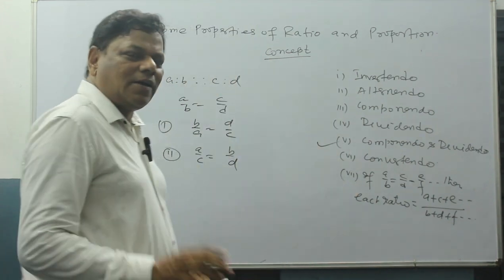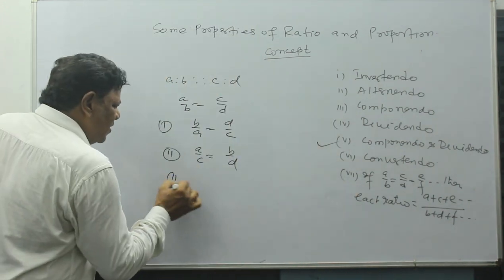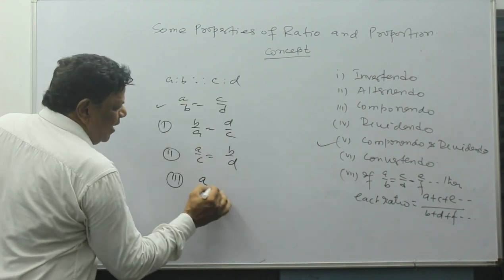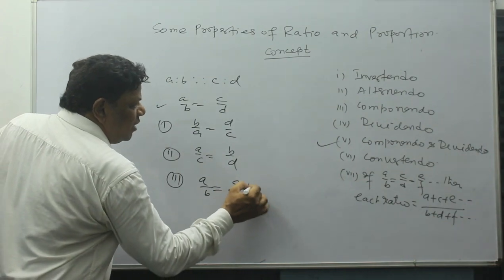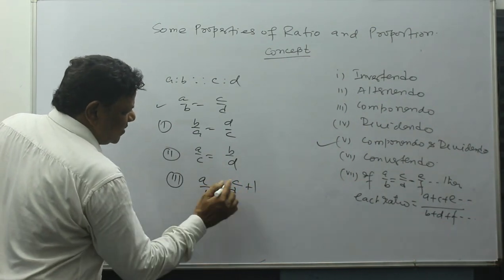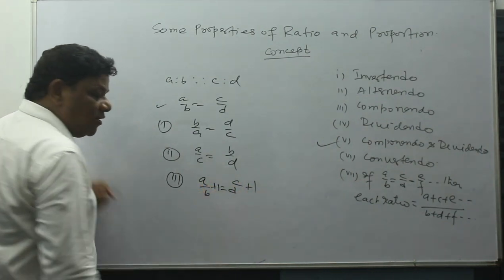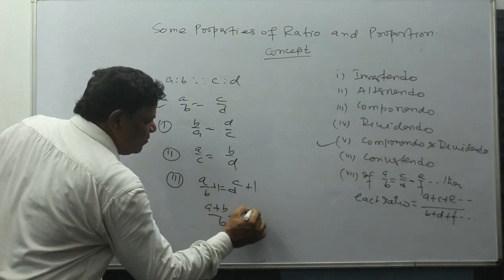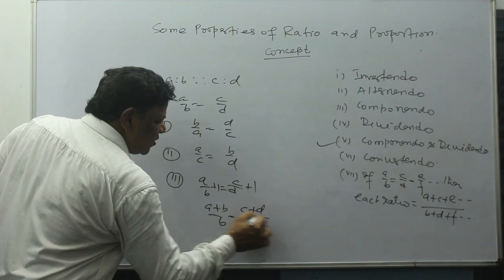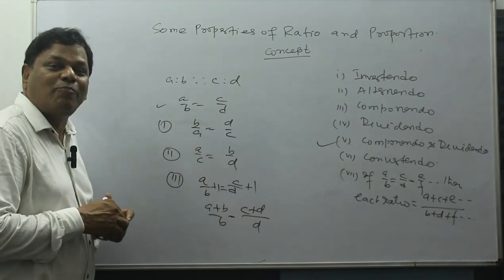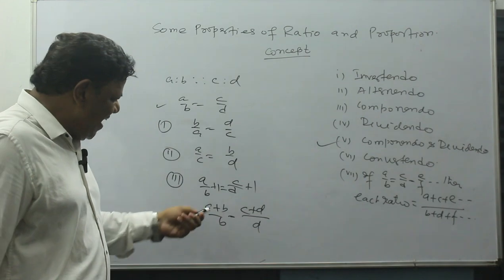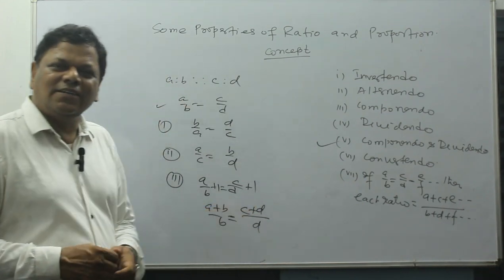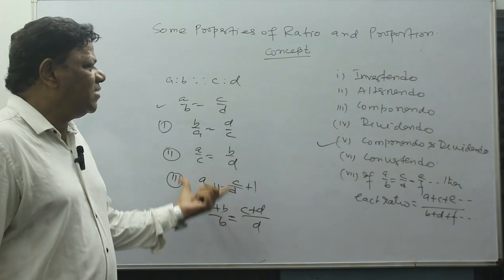The third property is Componendo. If a/b = c/d is given, and I add 1 to both sides, then it becomes (a+b)/b = (c+d)/d. Componendo means addition — directly I can say a plus b by b equals c plus d by d. This is called Componendo.